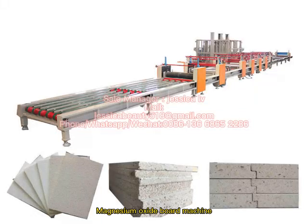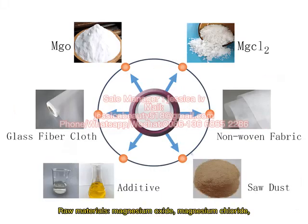Magnesium Oxide Board Machine. Raw materials include: Magnesium Oxide, Magnesium Chloride, Glass Fiber, Non-Woven Fabric, Additives, and Sawdust.